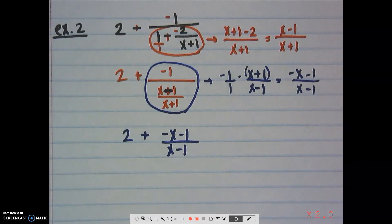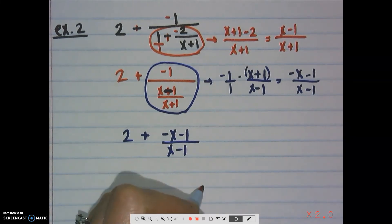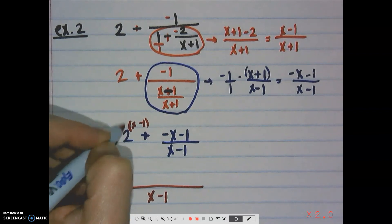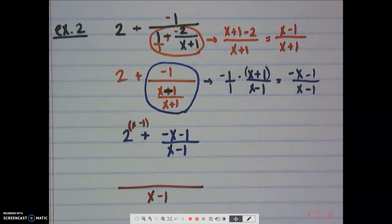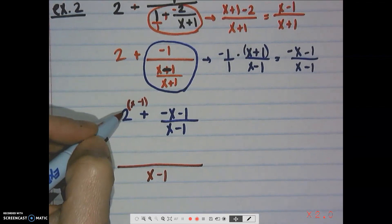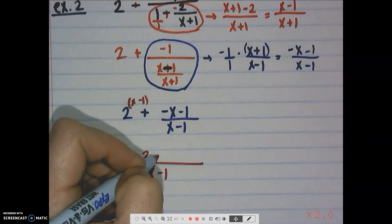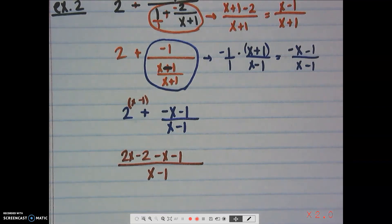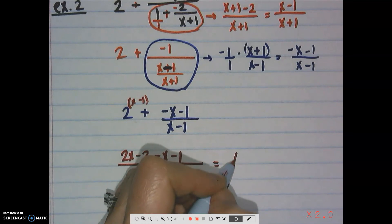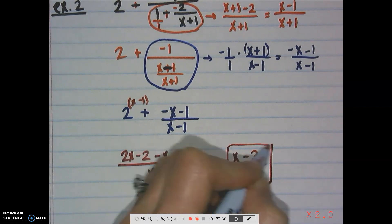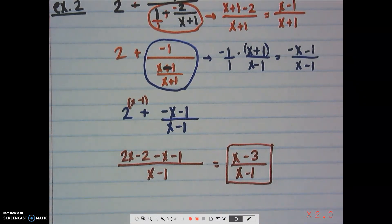We have 2 plus (−x−1)/(x−1), and that's our last piece. We make a common denominator of x minus 1. The first fraction is missing (x−1), so we distribute: 2 times (x−1) gives 2x minus 2. The second fraction already has the common denominator, so we carry down −x minus 1. Combining numerator terms gives us (x−3) over (x−1), and that is our final answer. Make sure you take your time and keep good track of what you're dealing with at any one time.